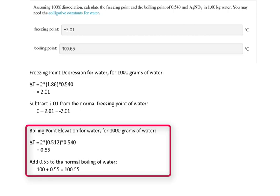The boiling point elevation looks very similar, except we use 0.512 rather than 1.86. This gives us a temperature change of 0.55, which is then added to 100 to give a new boiling point of 100.55.